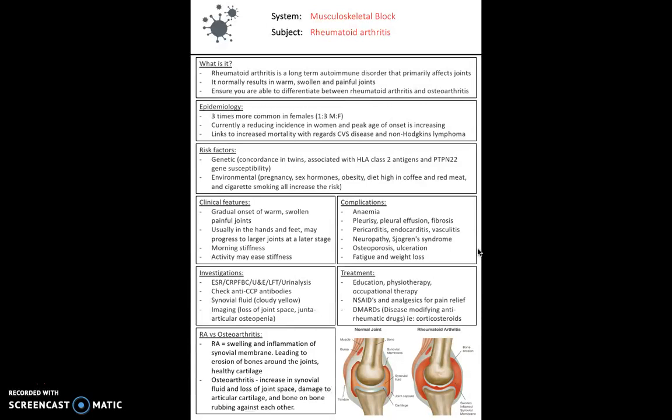The key clinical difference between rheumatoid arthritis and osteoarthritis: Osteoarthritis will be covered in a later video. It is essentially an increase in synovial fluid and loss of joint space, so damage to articular cartilage and bone-on-bone rubbing. This is different from rheumatoid arthritis. Rheumatoid arthritis, as you can see in this picture here in the bottom, is swelling and inflammation of the synovial membrane leading to erosion of the bones around the joint and healthy cartilage remains. So it's all about inflammation of the synovial membrane in rheumatoid arthritis.